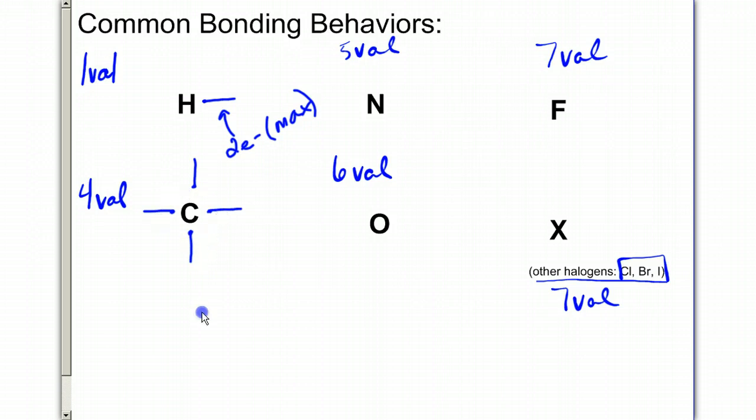Nitrogen has 5 valence. Notice that we have one pair of electrons here, and then we have three single electrons. And those single electrons are going to form bonds. So we're going to have 3 bonds and one pair around nitrogen. This is 2, 4, 6, 8 creating the octet. So when nitrogen makes 3 bonds, it forms its octet.